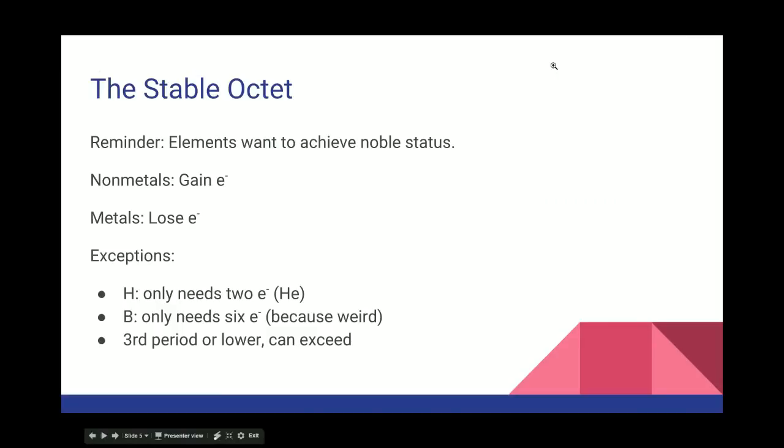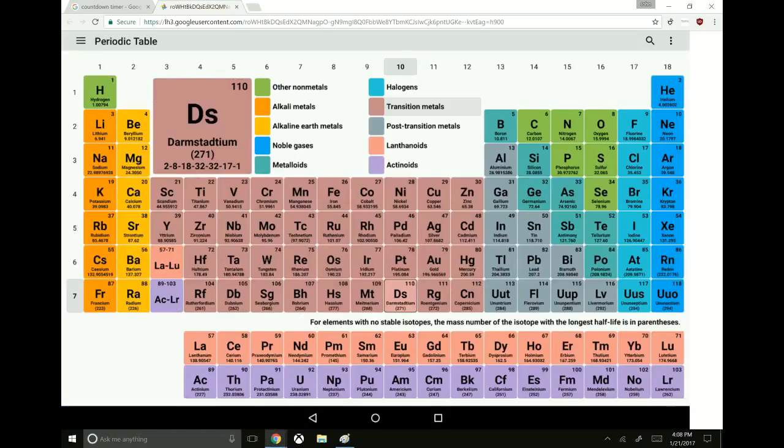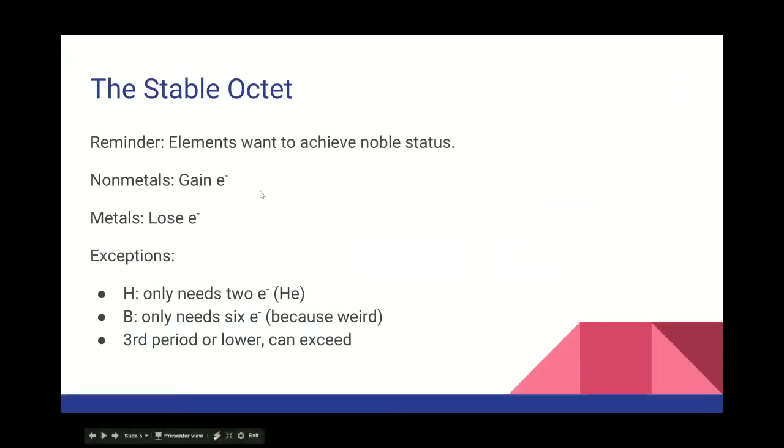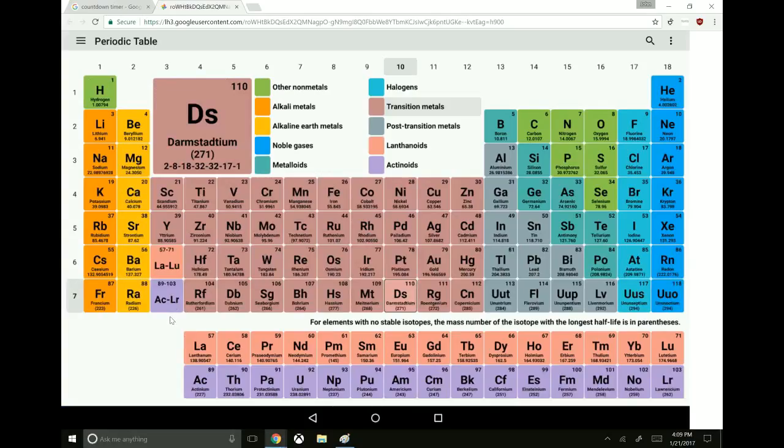Okay, but there are exceptions to that. These are elements that don't need eight electrons exactly. Hydrogen only needs to get to two, because the nearest noble gas for it is helium. And of course, lithium and beryllium, they lose electrons and they end up looking like helium as well. Boron only needs six electrons. It is kind of unique in that. It's the only one that really behaves that way. Boron is up here, number five. It doesn't need eight electrons. It's happy with six. It can go to eight. It's not like it's forbidden. It's just weird in some way. And so it is happy with six.